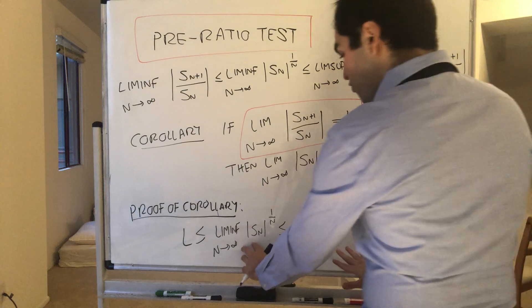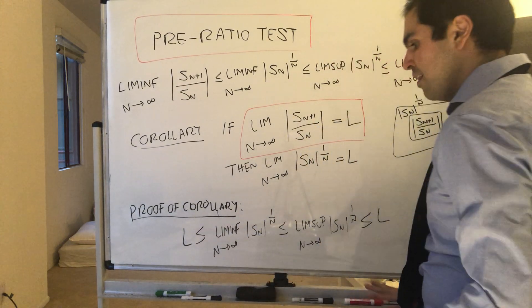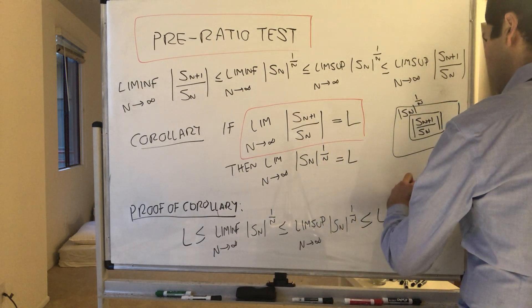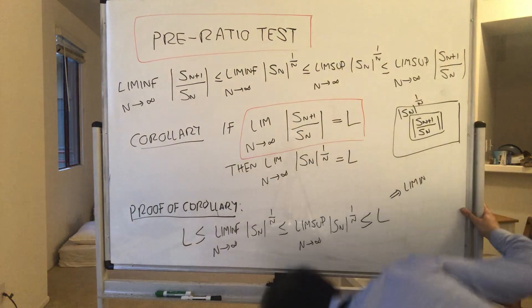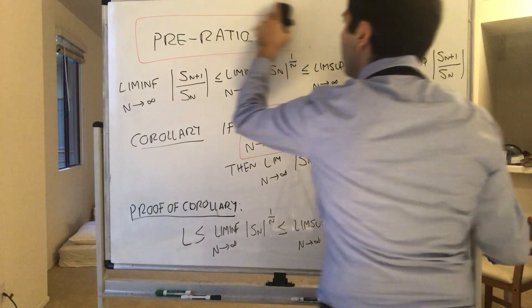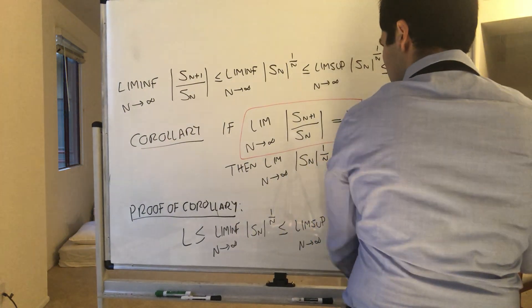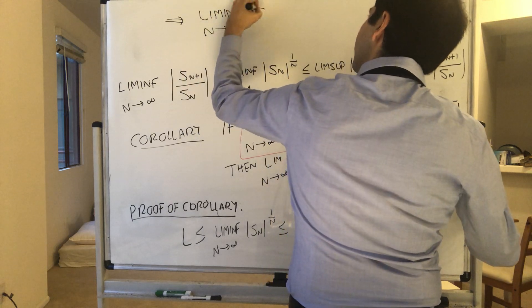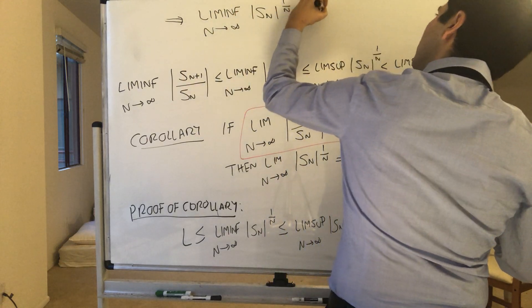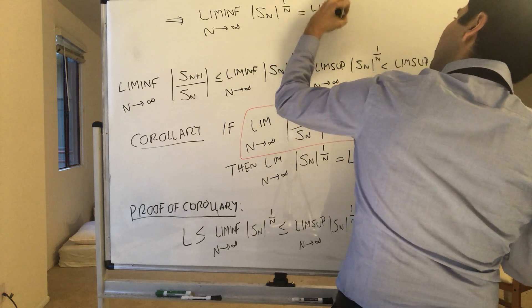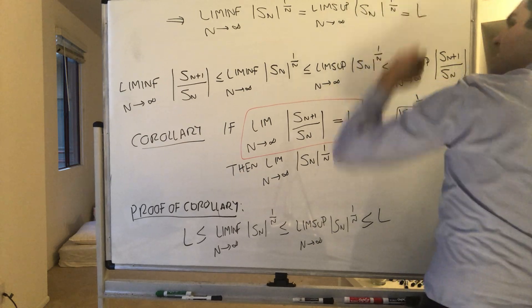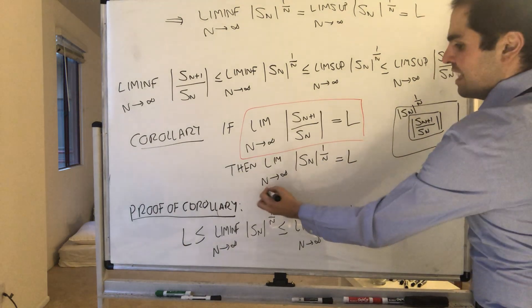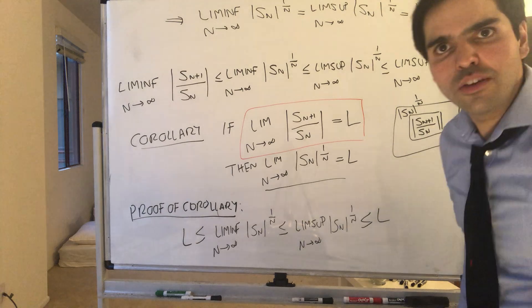But then, the liminf and the limsup are squeezed between L, so in particular the liminf equals the limsup. Therefore, the liminf as n goes to infinity of S_n to the 1 over n equals the limsup as n goes to infinity of S_n to the 1 over n, and that equals L. By the limsup squeeze theorem, we get that this limit equals L, and we are done.